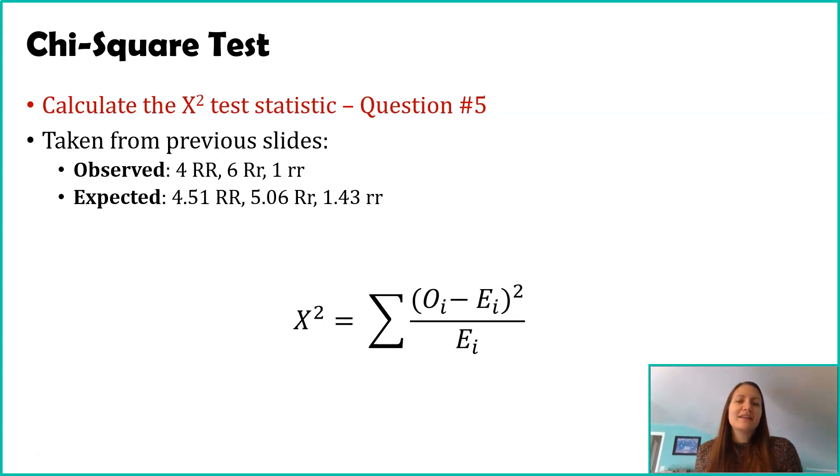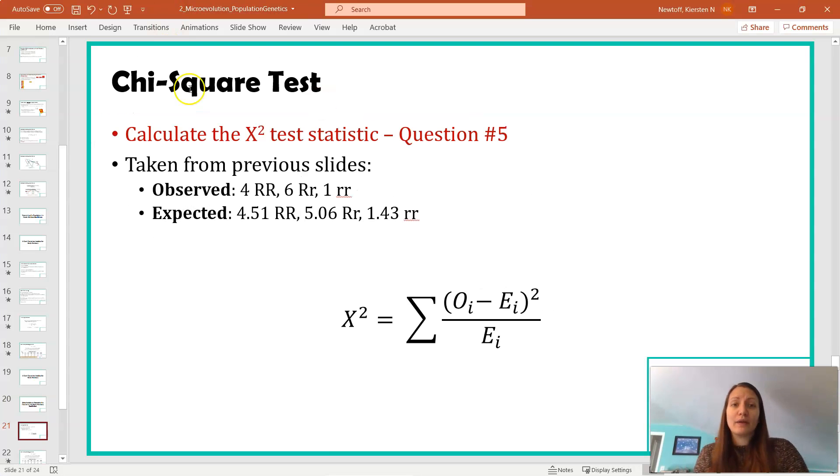So our next step is just plugging in our observed and our expected values into our chi-square equation. Now you guys can do this on your own. I am going to work out this problem just so that you guys are following and doing the same math. So I'm going to go ahead and open up my notepad so that we can do this problem together.